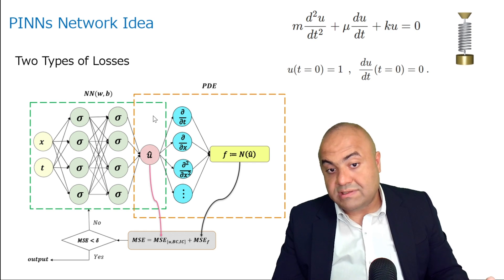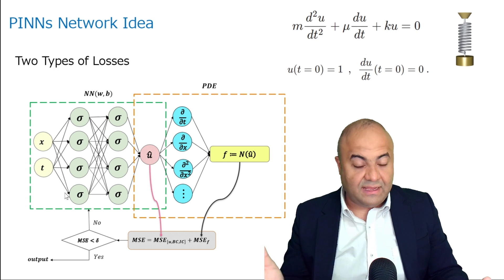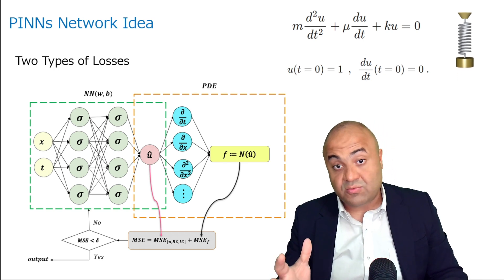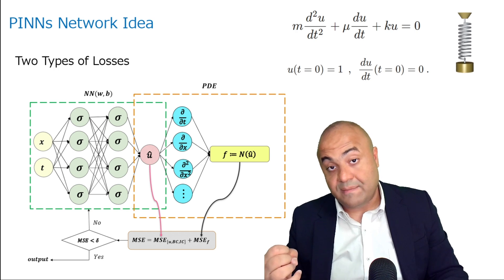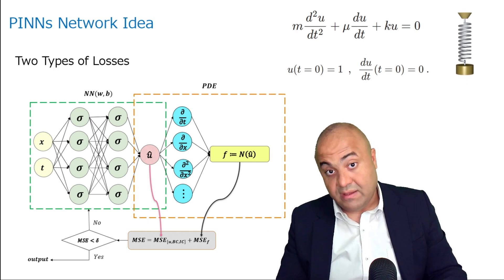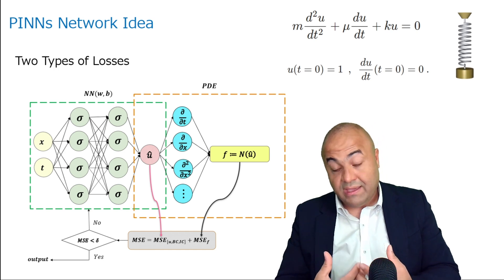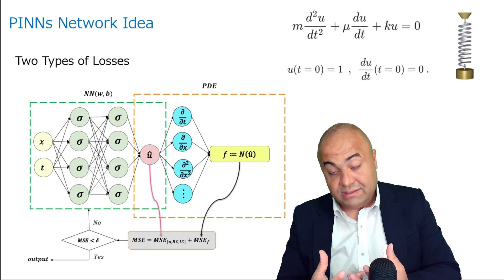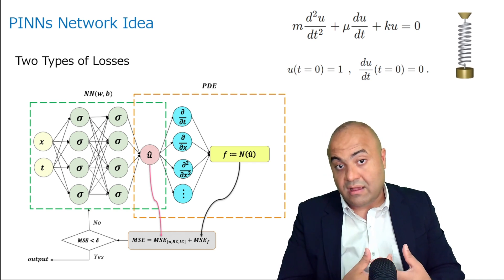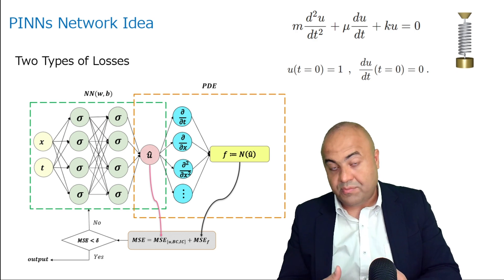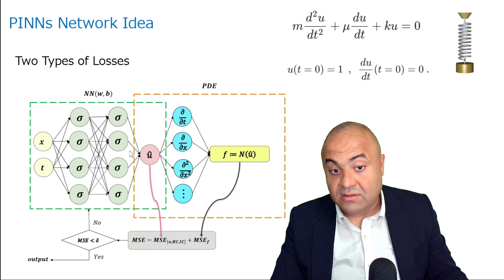A network can be used to predict these values, however any network needs to be trained. The loss functions are the way we train a neural network — we use them to compute how far the neural network is from the actual computation, and based on that we update the weights and biases of the network.